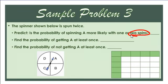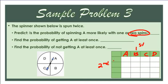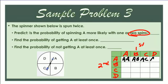To find the probability of getting A at least once with two spins, we create a chart. The first spin and second spin each have choices A, B, C, and D. So you can get: A-A, A-B, A-C, A-D. Those are your four choices when your first spin is A.